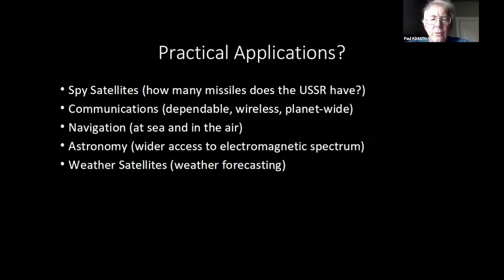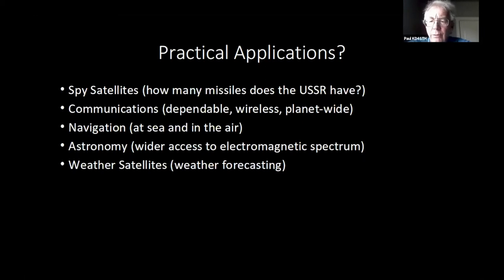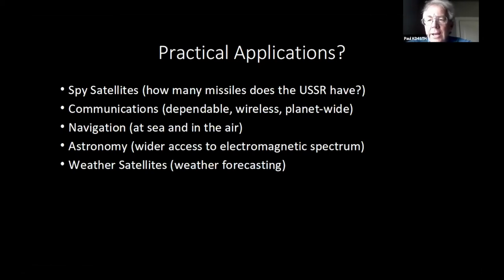One of them was spy satellites. The United States wanted to know how many missiles the Soviet Union had — they were claiming they were rolling missiles off the assembly line like sausages, but we had no way of knowing. We did try to use aircraft: the U-2 to start with, and later the SR-71. But overflying Soviet airspace is a violation, and even at high altitude and speed, they still represent a target that can be shot down.